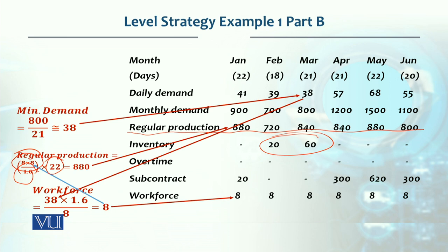On that basis, January's production comes to 880 units — and that is what we produced. It is falling short of 20 units to meet the demand in January. So we have subcontracting of 20 units to give out for production, meaning we subcontract 20 units. In February, production is 720 units. Using 8 workers with the same formula, 720 units are produced, whereas the demand was 700, so 20 units of inventory build up.